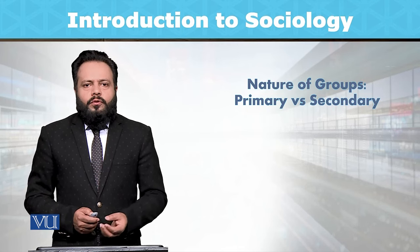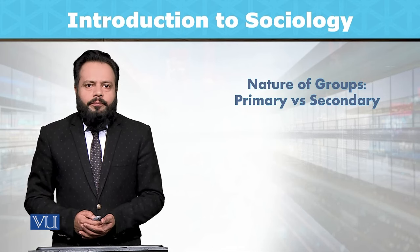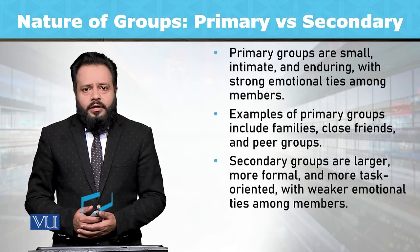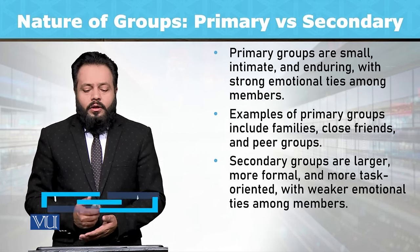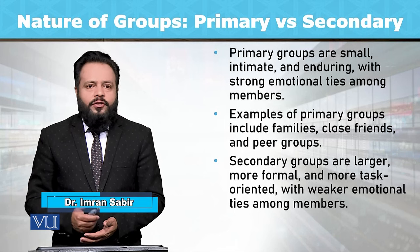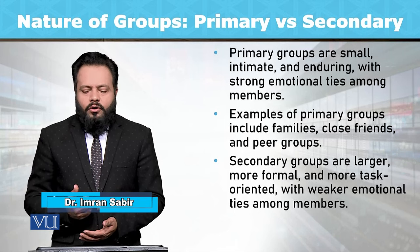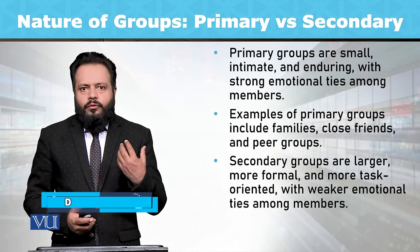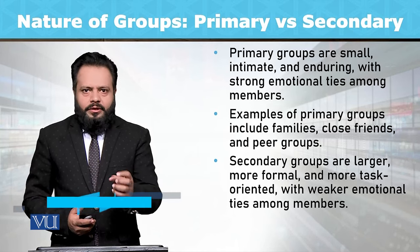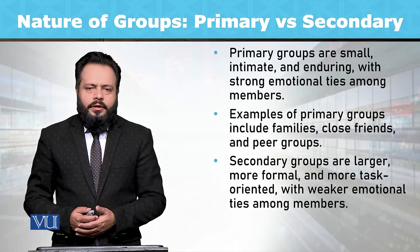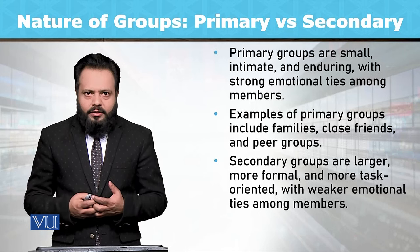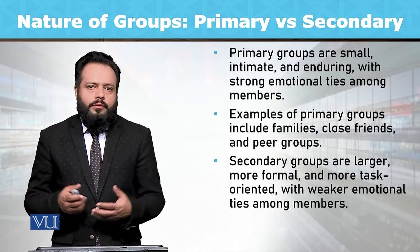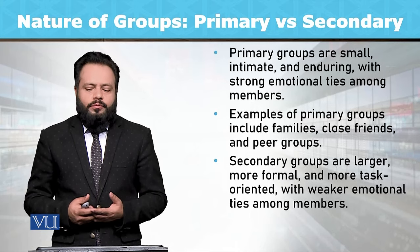Groups जो हैं वो अमूमन दो तरह के होते हैं — primary and secondary groups. Primary groups are small, intimate and enduring with strong emotional ties among group members. Primary groups जो हैं वो relatively छोटे होते हैं, लेकिन आपस में बड़े गहरे तालुकात रखते हैं और इनके दर्मियान emotional ties या emotional relationships होते हैं.